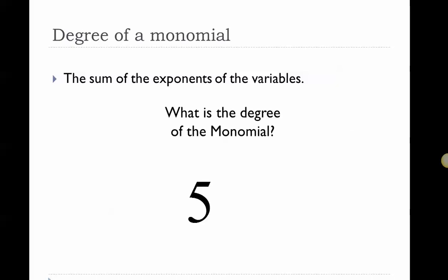Here's the first one: 5. Are there any variables? No. Therefore, the exponents would have to be 0. Since the exponents of the variables is 0, that makes this a 0th degree monomial. How about this one? x to the third. The variable x has an exponent of 3, so that means this is a third degree monomial.